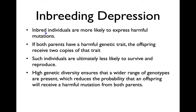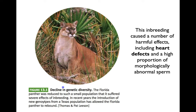Populations with low genetic diversity usually suffer something called inbreeding depression, where inbreeding itself causes the species to be unlikely to survive — they get bad genetic traits that cause them to die sooner. To avoid inbreeding, you want to keep biodiversity high, with a lot of different species with different genotypes. Inbred individuals are more likely to express harmful genetic mutations. If both parents have a harmful genetic trait, their offspring will receive two copies of that trait, making them less likely to survive. High genetic diversity ensures a wider range of genotypes are present, reducing the probability that offspring receive two harmful mutations from parents.